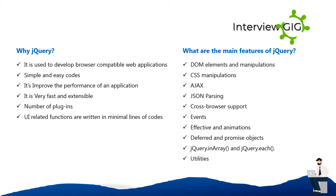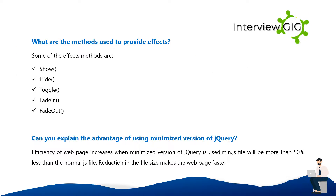UI-related functions are written in minimal lines of code. What are the main features of jQuery? DOM elements and manipulations, CSS manipulations, Ajax, JSON parsing, cross-browser support, events, effective animations, deferred and promise objects, jQuery.inArray, and jQuery.each utilities.